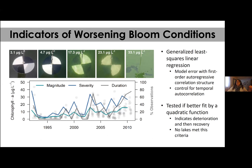For the trend analysis—looking for increasing or decreasing magnitude, severity, and duration—we used a generalized least squares linear regression with a first-order autoregressive correlation structure to control for temporal autocorrelation. We also tested whether these 323 lake time series were better fit by a quadratic function, which might indicate that a lake had deteriorated but then improved or vice versa. None of our lakes were better fit by the quadratic function, so we used the least squares regression.